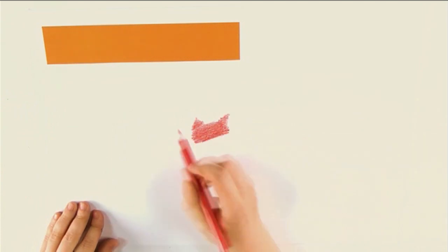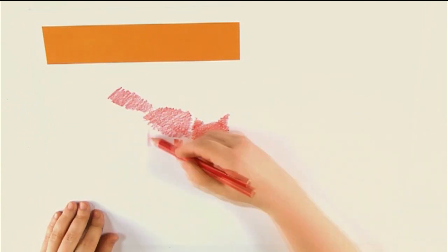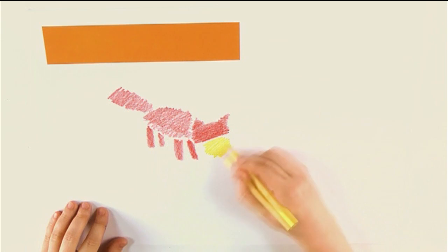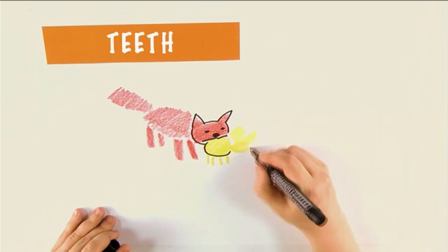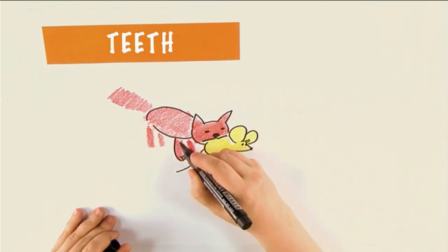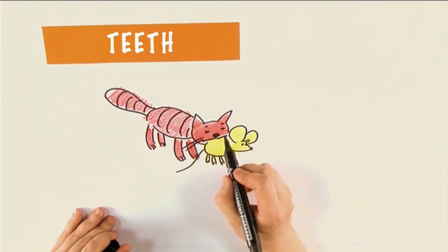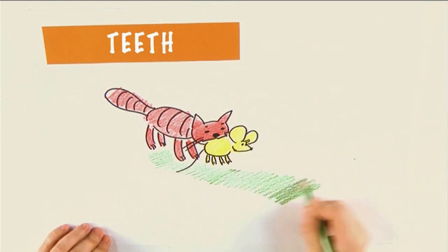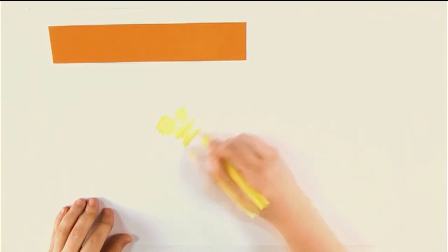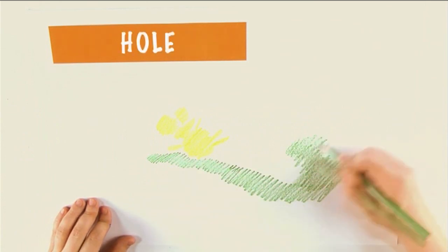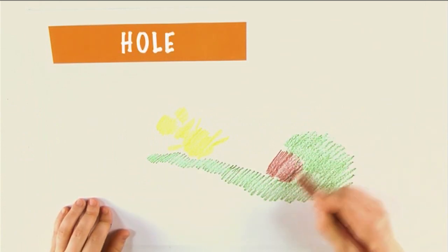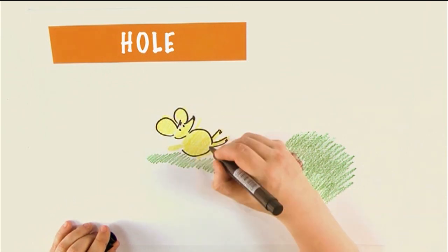Well, said kitten. Да, сказал котенок. I'll have to take you home in my teeth. Придется мне тебя домой в зубах отнести. And he took him straight to his hole. И отнес его прямо к норе. And then he pushed him with his nose. А потом подтолкнул носом. And little mouse rolled right in the hole. И мышонок скатился прямо в норку.